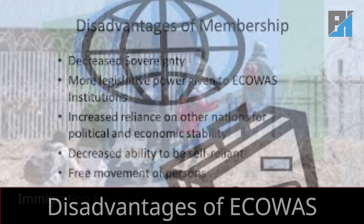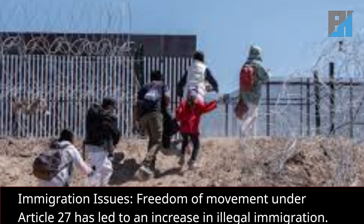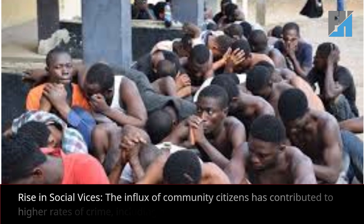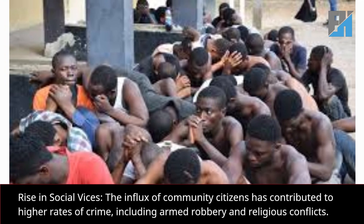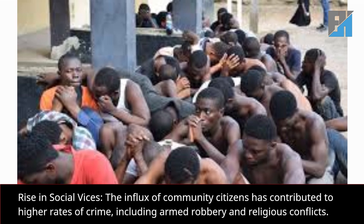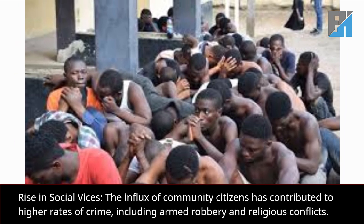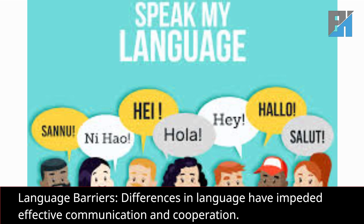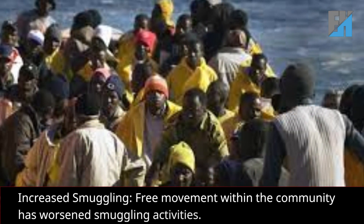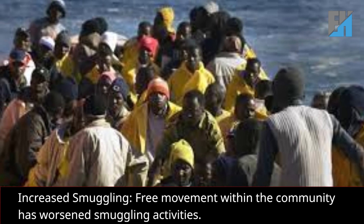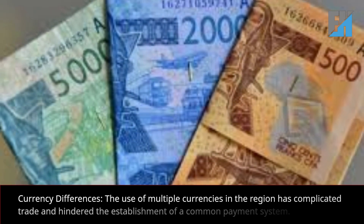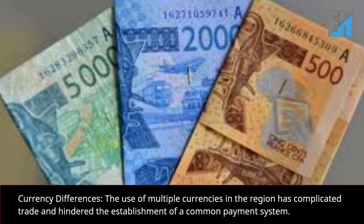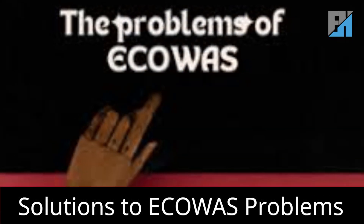Disadvantages of ECOWAS: Immigration issues — freedom of movement under Article 27 has led to an increase in illegal immigration. Rise in social vices — the influx of community citizens has contributed to higher rates of crime, including armed robbery and religious conflicts. Language barriers — differences in language have impeded effective communication and cooperation. Increased smuggling — free movement within the community has worsened smuggling activities. Currency differences — the use of multiple currencies in the region has complicated trade and hindered the establishment of a common payment system.